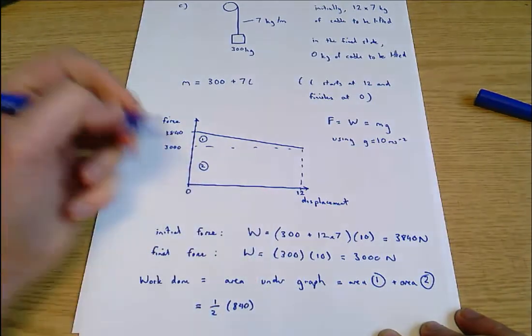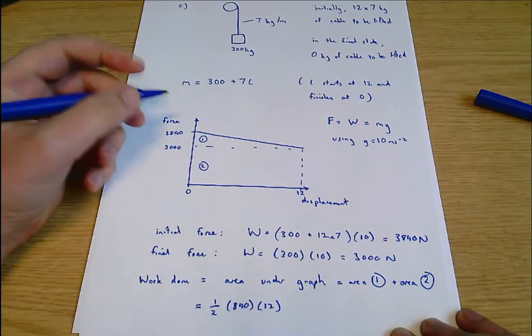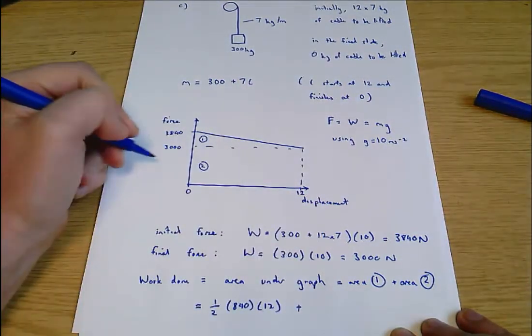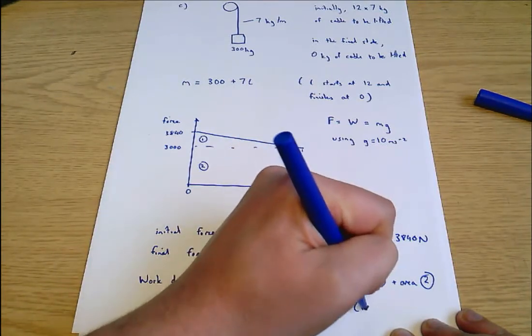Area one is a triangle with height 840 and base 12. Area of a triangle is a half base times height. A half times height times base, 840 times 12. Doesn't matter which order I do them in. Area two is a rectangle with height 3000 and width 12. So that has area 3000 times 12.